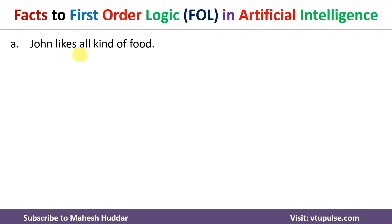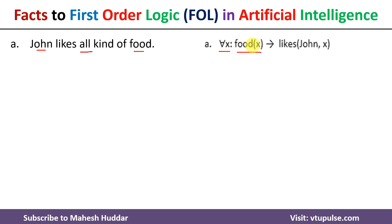The first fact is: John likes all kind of food. Because the word 'all' is present, we take 'for all X'. If X is a food, then John will like that X. So the FOL representation is: for all X, if food(X) then likes(John, X). This is how we convert the fact into first order logic.